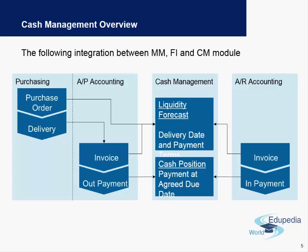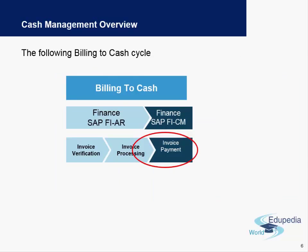Similar to outgoing payments to vendors, incoming payments from customers also affect our cash position, as the cash balance goes up when payments are received from customers. The billing-to-cash cycle indicates the incoming part of cash management. So there are two different parts: one from Accounts Payable when outgoing payments are made, and Accounts Receivable where incoming payments are recorded.